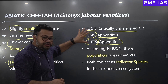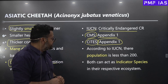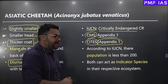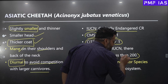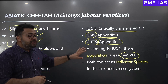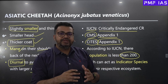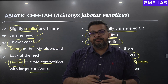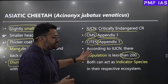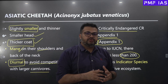Both CMS and CITES treat the Asiatic Cheetahs as threatened species. When it comes to the population, according to IUCN, Asiatic Cheetahs have a population of less than 200. According to most resources, the population number is somewhere around 110, but Iran happens to claim a similar number. So the population is not more than 200 as of now.